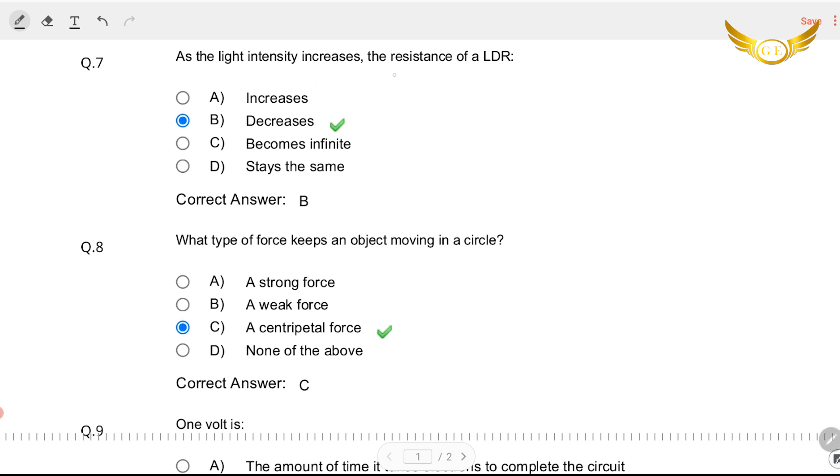Let's do the next question. As the light intensity increases, the resistance of LDR. LDR is the light dependent resistor. It's just for your information. This is a kind of resistor. When the light falls on it, the resistance of it changes. So as the light intensity increases, the resistance of the LDR decreases. Okay this is just for you to know.